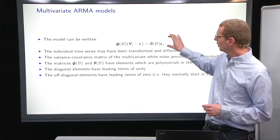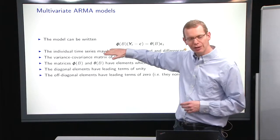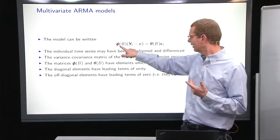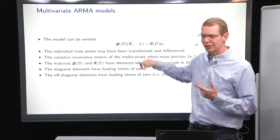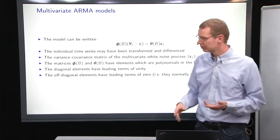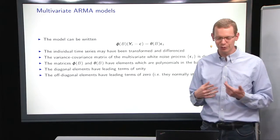So the general ARMA model, we can write it in the same way as in the univariate way, where the only difference is that now we have coefficients that are matrices, and our state is a vector. Likewise, the noise is also a vector.